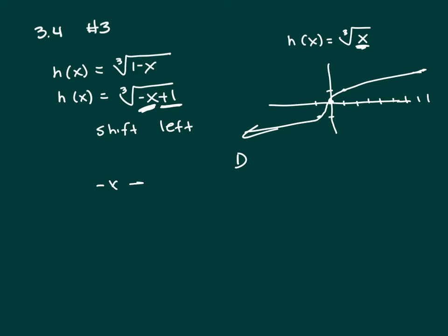So the negative x, that's reflect across y. And then the plus 1 means you've shifted left 1 unit.